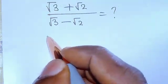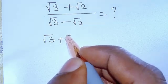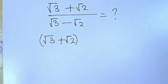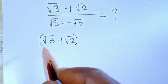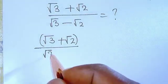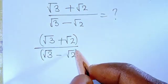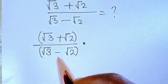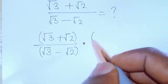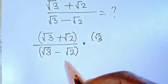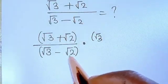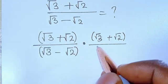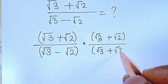So therefore, I'm going to have this root 3 plus root 2. We're going to multiply both the numerator and the denominator by the conjugate of the denominator. You can see that the denominator is root 3 minus root 2, so the conjugate is obtained by changing that negative sign to positive — root 3 plus root 2. Because we are rationalizing the denominator, we take the conjugate of the denominator.